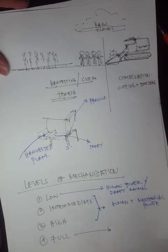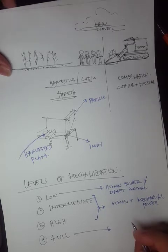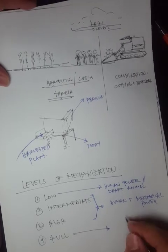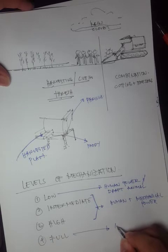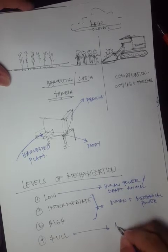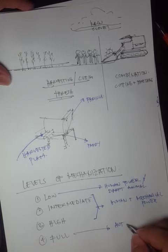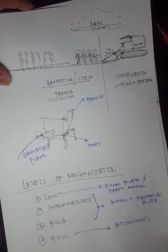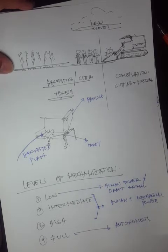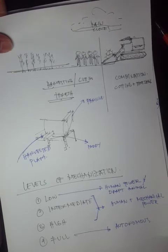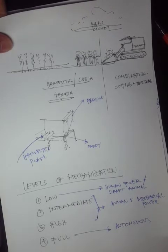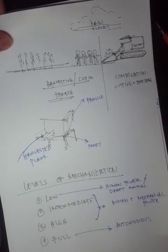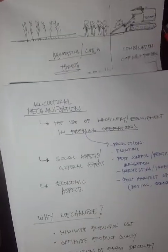Full mechanization involves very minimal human intervention — it relies on mechanical power sources, with autonomous tractors as a specific example. Please refer to the lecture handout for illustrations of each level. Now let's move on to an overview of machines and equipment used in rice production.